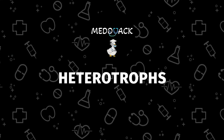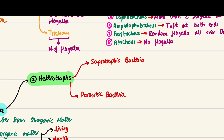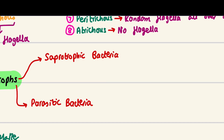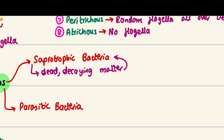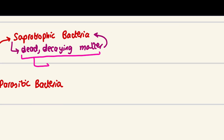Now let's move on to heterotrophs. Heterotrophs have two further branches: saprophytic bacteria and parasitic bacteria. Saprophytic bacteria use dead and decaying matter. The bacteria first digest this matter externally and then absorb it — this is called extracellular digestion.